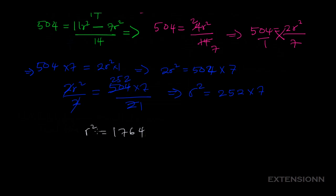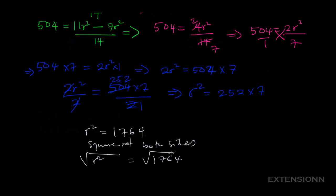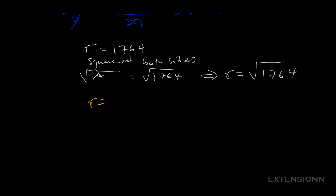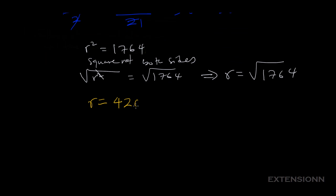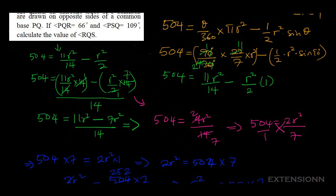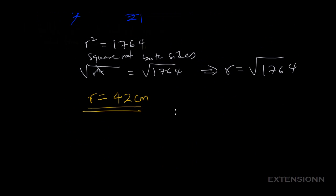Now we have R squared equals 1764, but we need R. We take the square root of both sides: R equals the square root of 1764, which gives us 42. So R equals 42 centimeters. It is always useful to keep your answer in the unit you are working in.